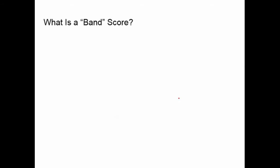Your scores from 1 to 9 are called band scores. A band 1 is basically a non-user of English — this person cannot really understand English, cannot speak, cannot write. As you go through the bands all the way up to 9, a band 9 is an expert user of English. Each level has its own set of characteristics that define that level.